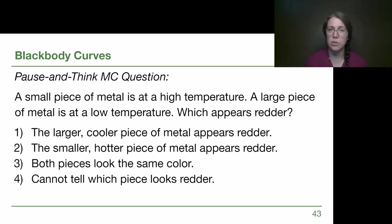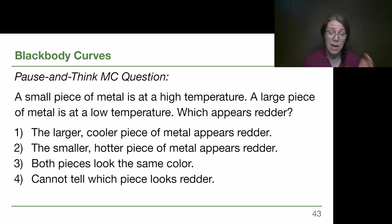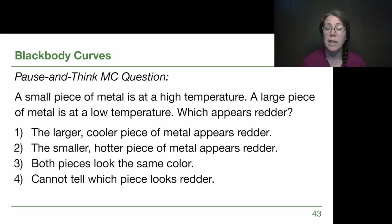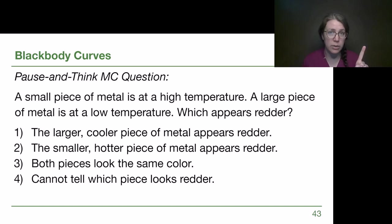In the previous several slides, we have not talked about the size of objects — small stars and big stars — and how that would have any effect on color. The thing we highlighted and wrote down in our notes is that temperature determines the color, full stop. That's all that matters. So if we're being asked which one appears redder, the only thing we care about is temperature, and redder things are going to be cooler. So that larger, cooler piece of metal appears redder — that's option one — and it has nothing to do with size.